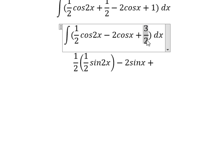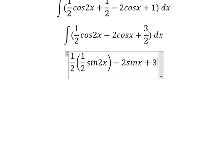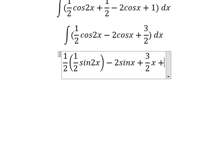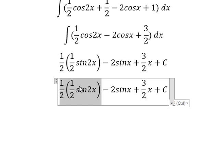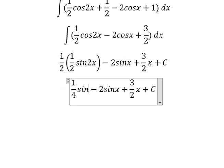The integration of 3 over 2, this is about the constant. And we have 3 over 2x and we put about c. So this one, we have 1 over 4 sine 2x.